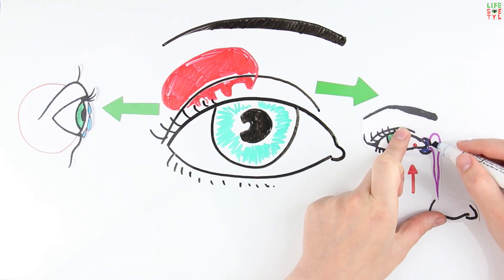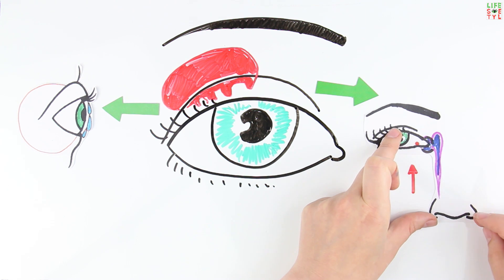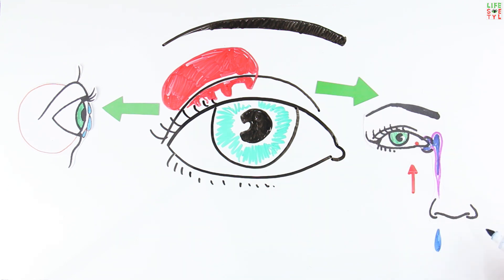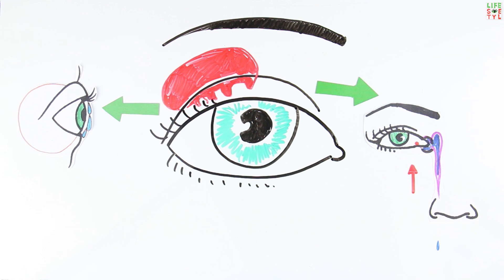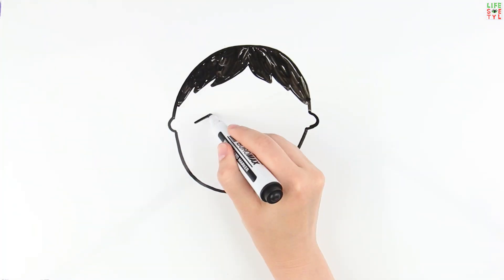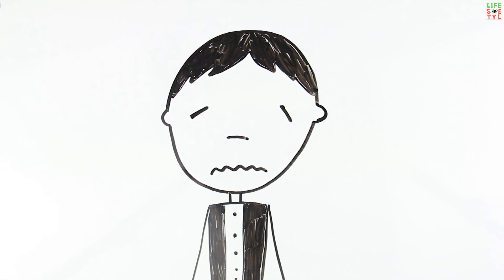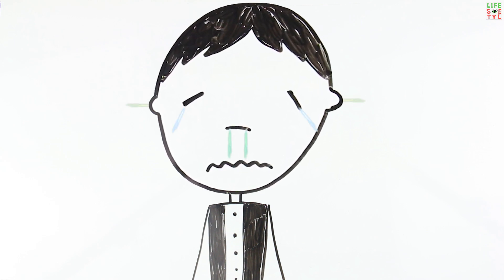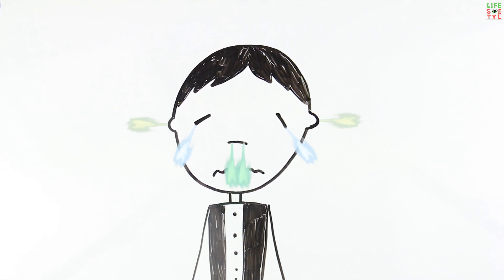The nasal lacrimal canal causes excess tear fluid to drain into the nose. Therefore, when your eyes are watering, a thin fluid begins to flow from your nose. If there is so much lacrimal fluid that the nasal lacrimal canal cannot direct it to the nose, tears are formed that roll down the cheeks.